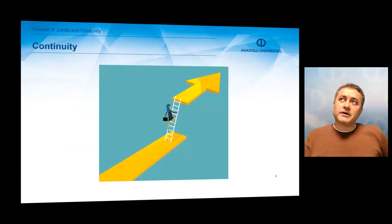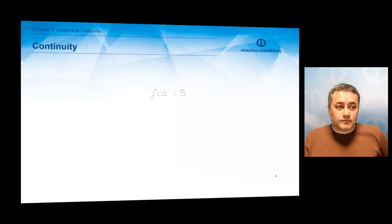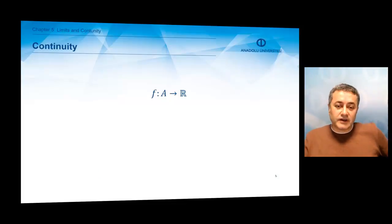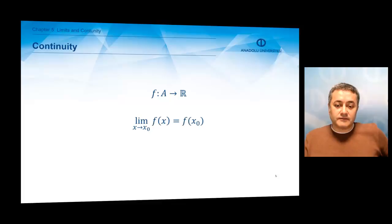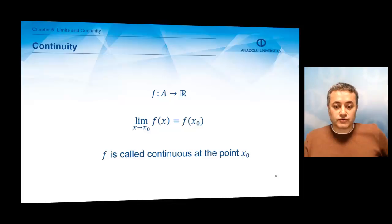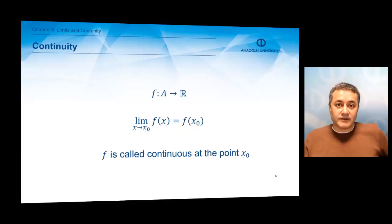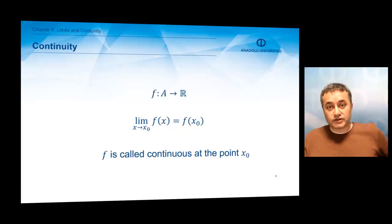What if the limit of the function and the value of the function are the same? This is probably one of the most important concepts in mathematics, called continuity, and let us define it. If we are given a function f from a set A to the real numbers, and if this function has a limit at a point x₀ where the limit is equal to the value of the function f(x₀), then we say that the function is continuous — f is called continuous at the point x₀. So the function must be defined at x equals x₀, and the limit must equal the value of the function for it to be continuous.